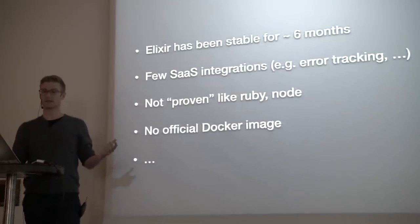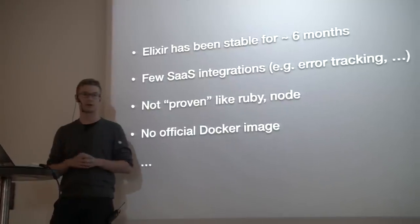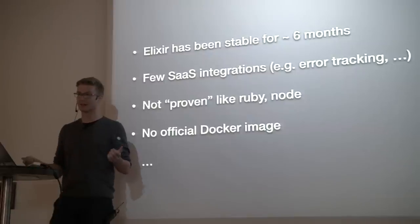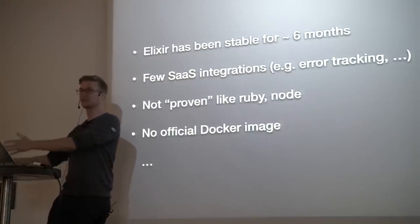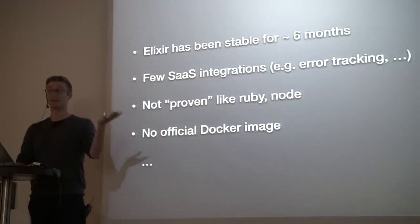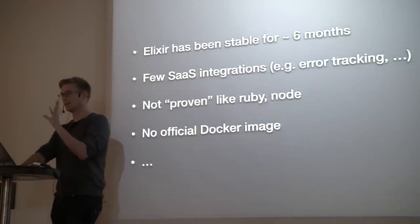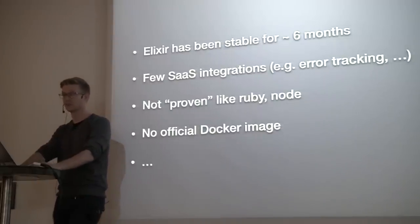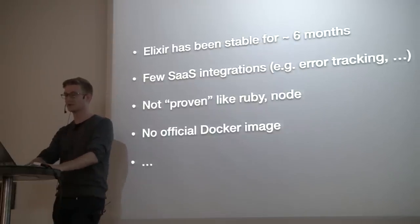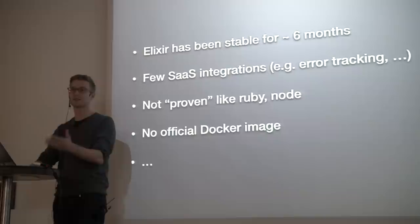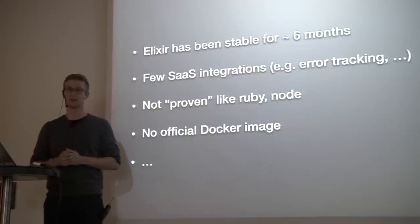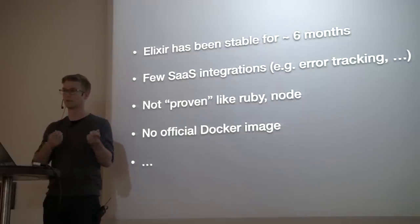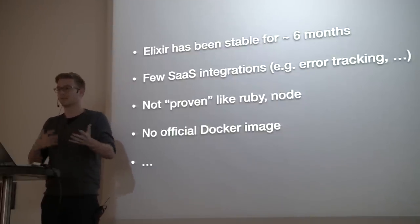A problem that results from that is few software-as-a-service integration points. With Ruby you get all of these SaaS tools you can plug into your app — you pay a bunch of money and it all works, ideally. With Elixir, the SaaS ecosystem is obviously not quite there yet. It's not proven like Ruby and Node. There are things like no official Docker images — we're using Docker to deploy. I ended up writing my own image and it took about 20 minutes, but these are small pain points we encountered.